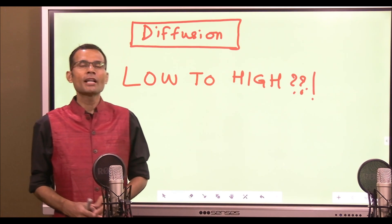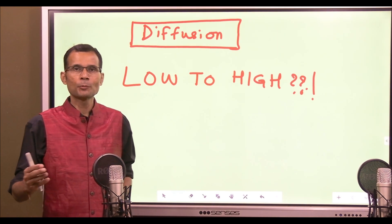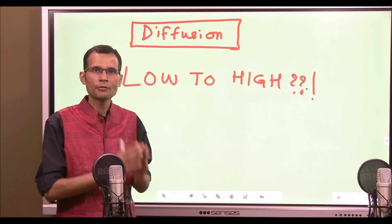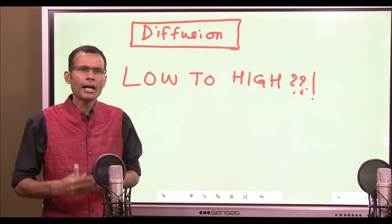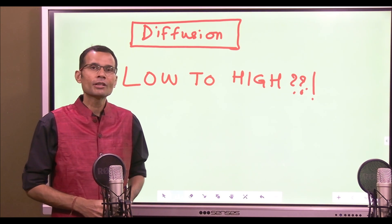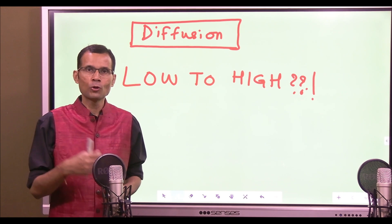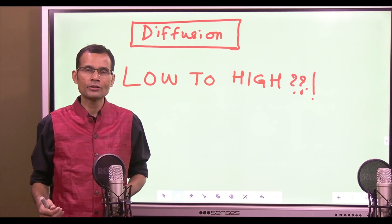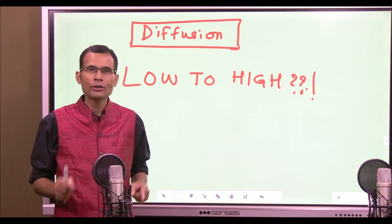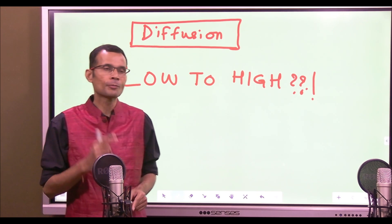Hello friends. The other day I was taking a lecture on transport processes and I was describing diffusion. I mentioned a statement that diffusion can go from high to low or low to high concentration, but net diffusion goes from high to low concentration, and in that sense it's a downhill transport.